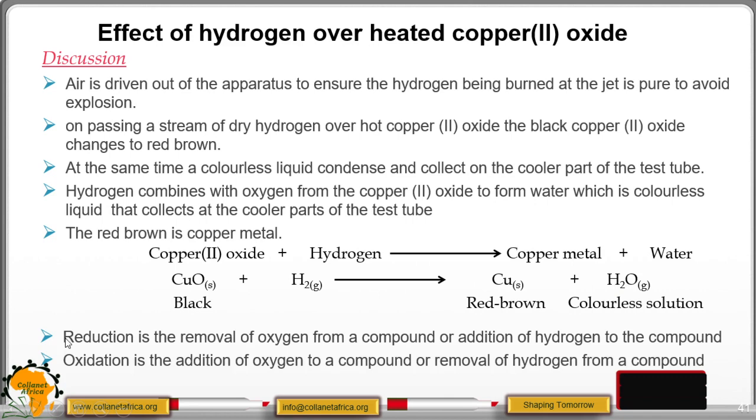Oxidation is the addition of oxygen to a compound or removal of hydrogen from a compound. Copper(II) oxide is undergoing reduction to form copper solid, which is red brown. And hydrogen gas is undergoing oxidation to form H2O.